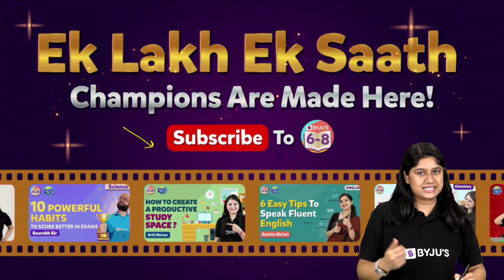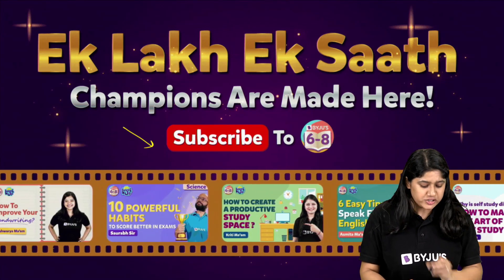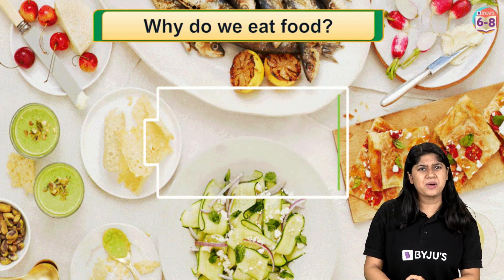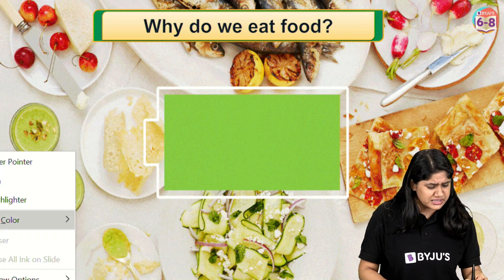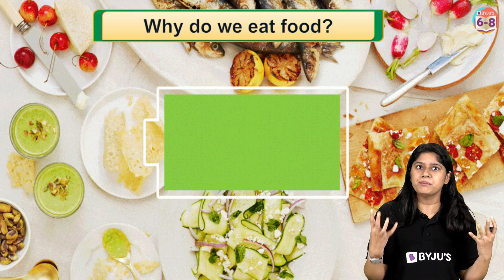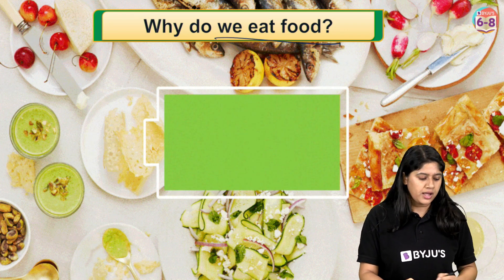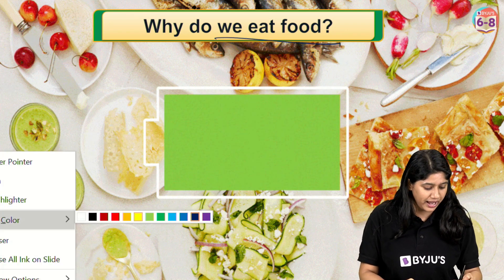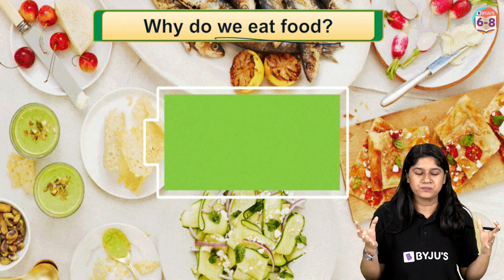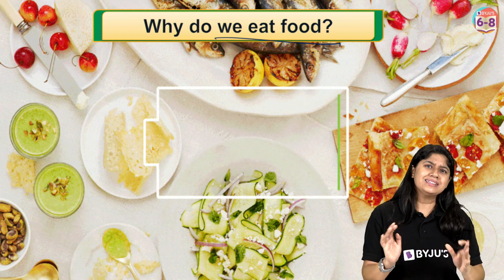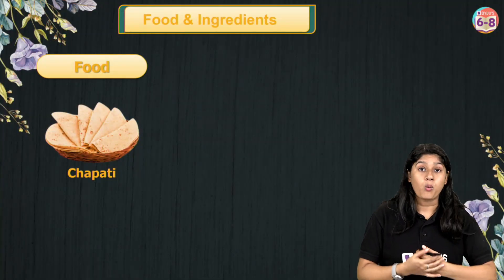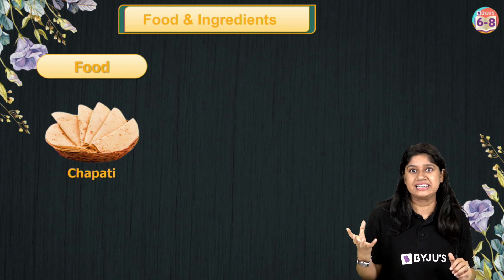Now let's get started. First we'll be discussing why do we eat food — a very basic question. All of us love eating food, but what is the reason behind it? We eat food so that we have energy and we can do various different activities. So we're clear on why we eat food, but let's understand more about what food is and of course what are the ingredients.